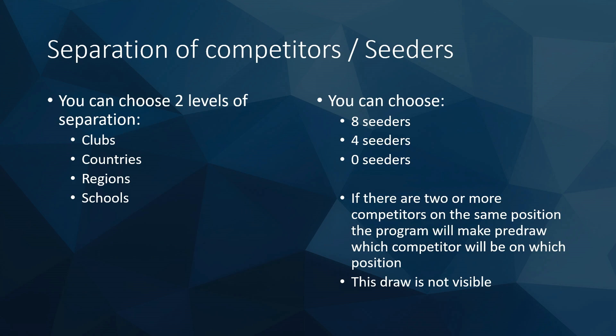For separation of competitors, you can have two levels. For national competitions, you can separate by club and region or vice versa. But for judo-based competitions, you usually have separation by countries on both levels. For the number of seeders, you can choose eight seeders, four seeders, or zero seeders — these are the usual numbers in competitions.